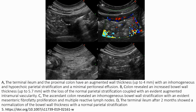Here are the ultrasound images showing how the bowel looks when we are concerned about enteropathy. Image A shows thickening of the jejunum and terminal ileum — this is a case of NSAID-induced enteropathy. Image B shows a colon with thickened wall and increased intramural vascularity. Image C shows ascending colon thickening with adjacent mesenteric fat changes.